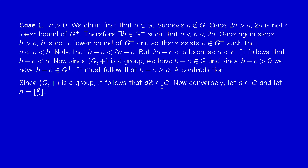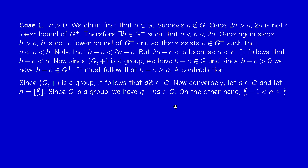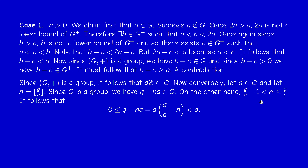Now I have to prove the reverse inclusion. Take an arbitrary element g in G. I want to prove that g is in aZ, i.e., of the form n·a. Take N to be the floor function of g/a. Now, g is in G and a is in G, so n·a is in G. The difference of two elements of G is in G, so g - n·a is in G. By a property of the floor function, the floor of a number is between that number minus 1 and the number itself.